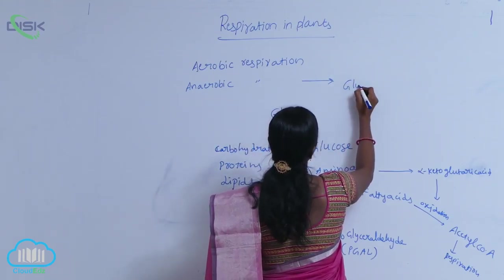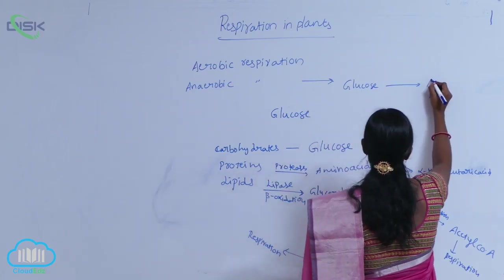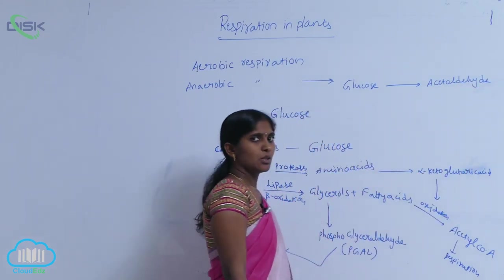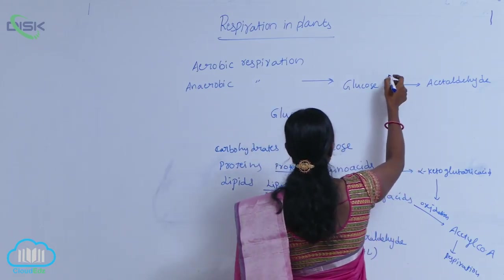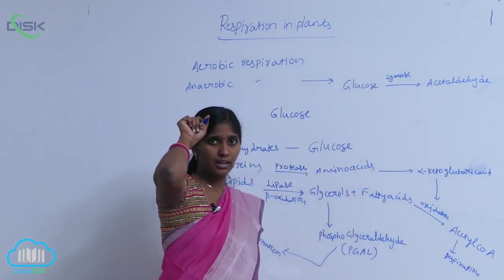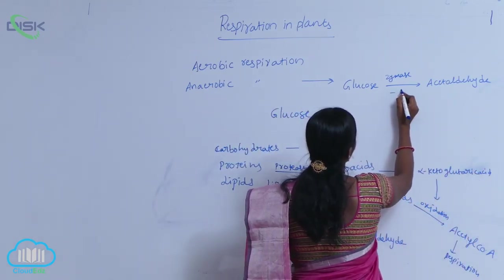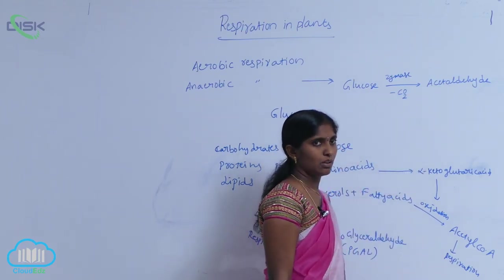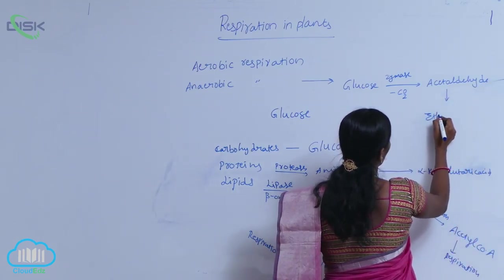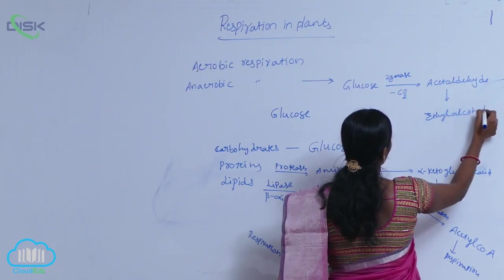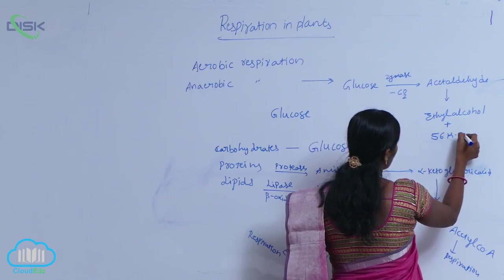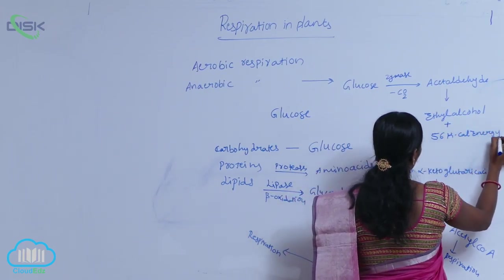In anaerobic respiration, glucose is turned into acetaldehyde. In the presence of microorganisms and the zymase enzyme, glucose is converted into acetaldehyde by releasing one carbon dioxide molecule. The acetaldehyde is then turned into ethyl alcohol. In this process, a little amount of energy is released — that is 56 kilocalories of energy.